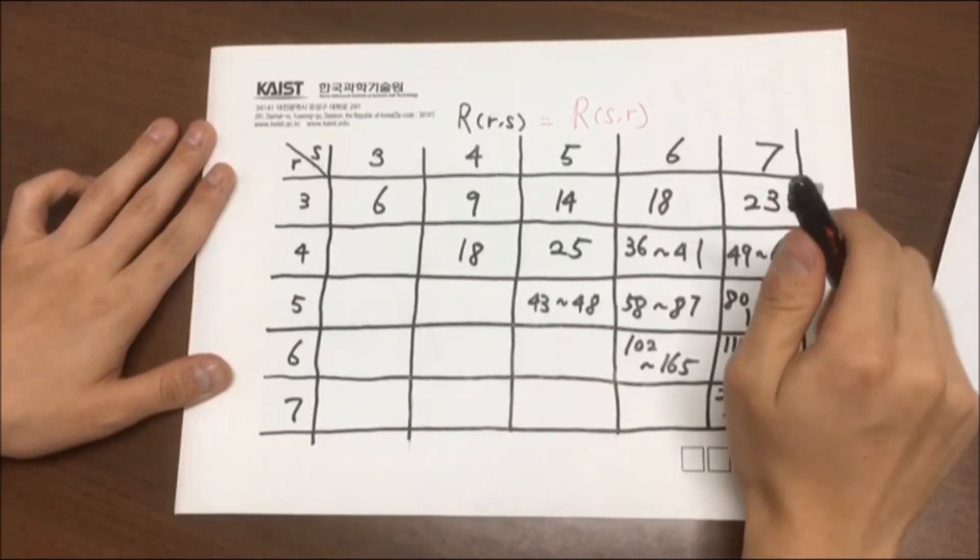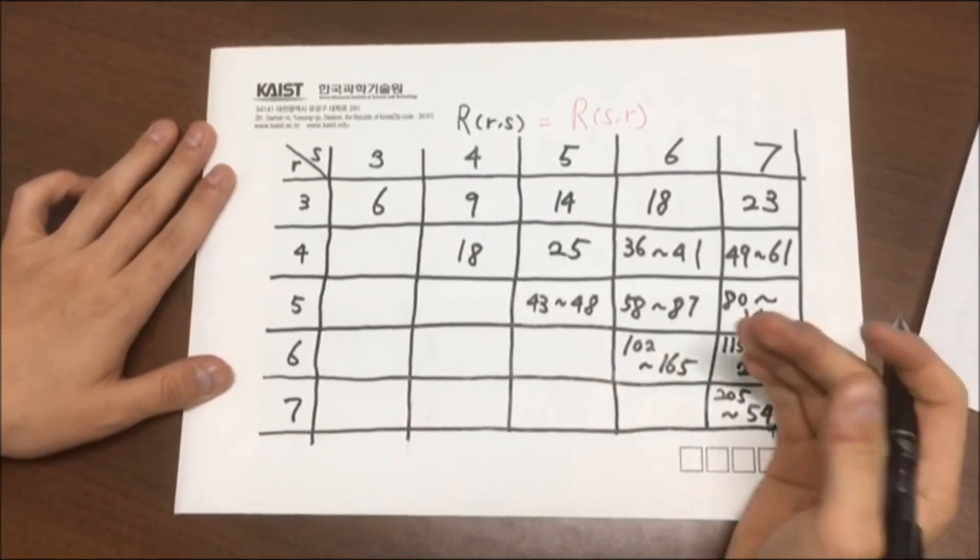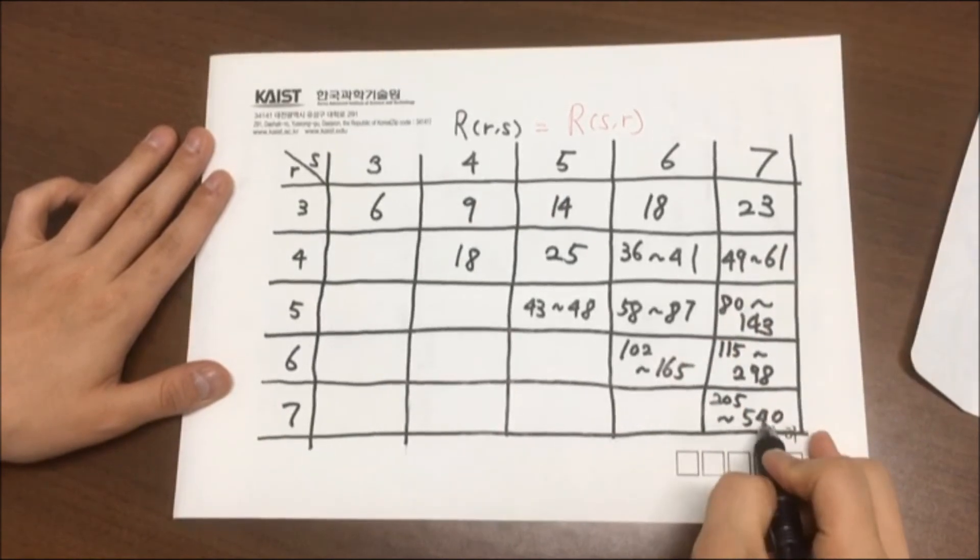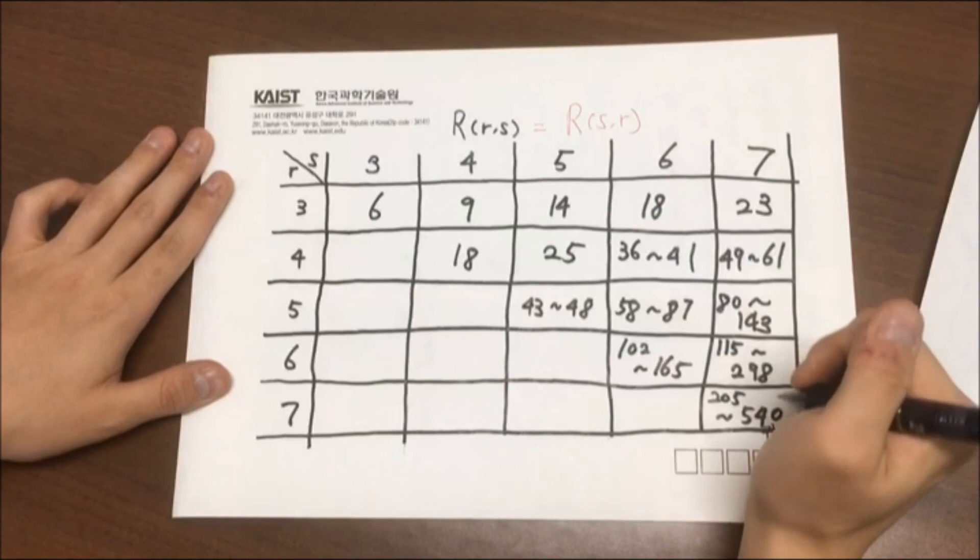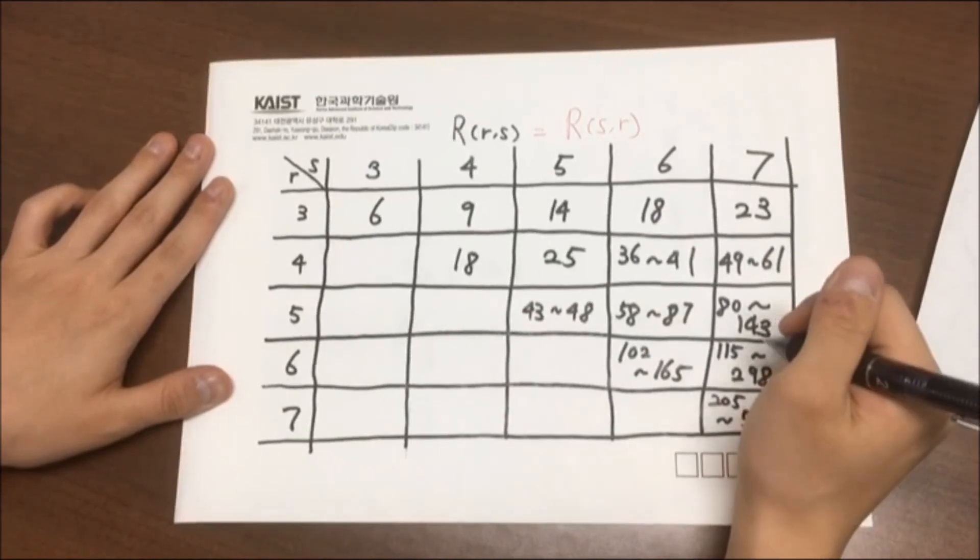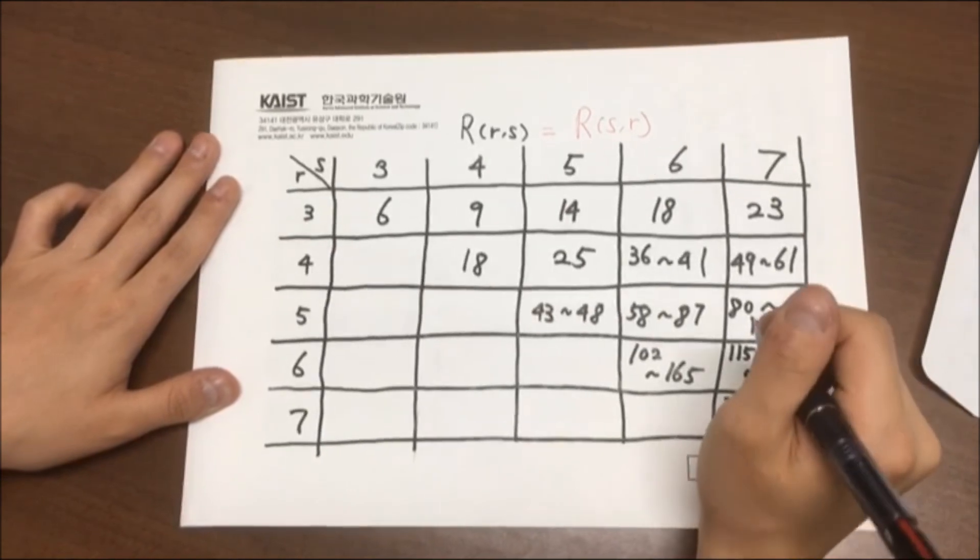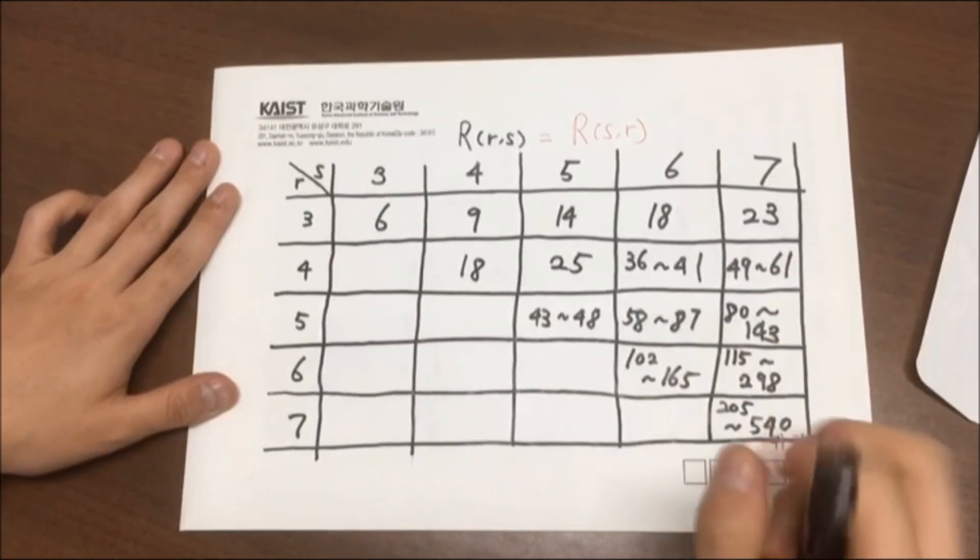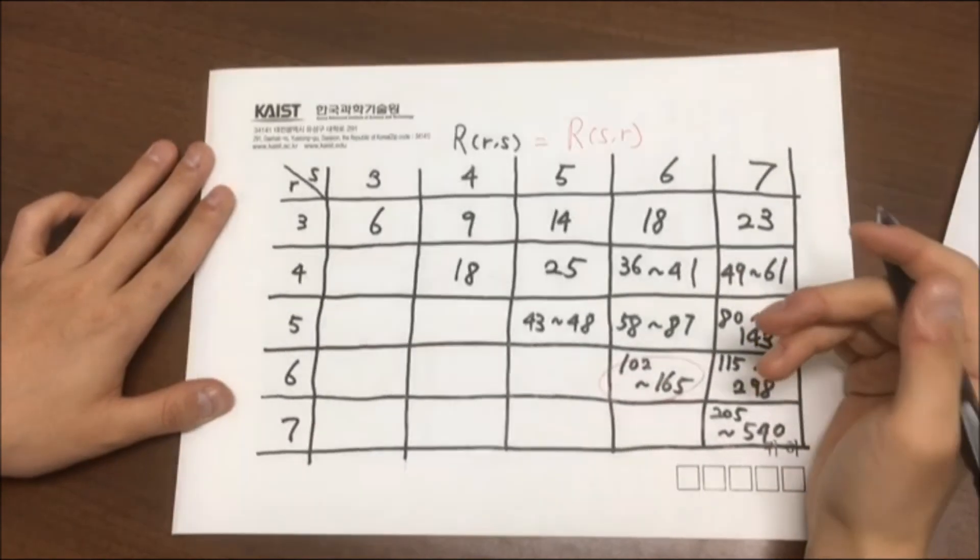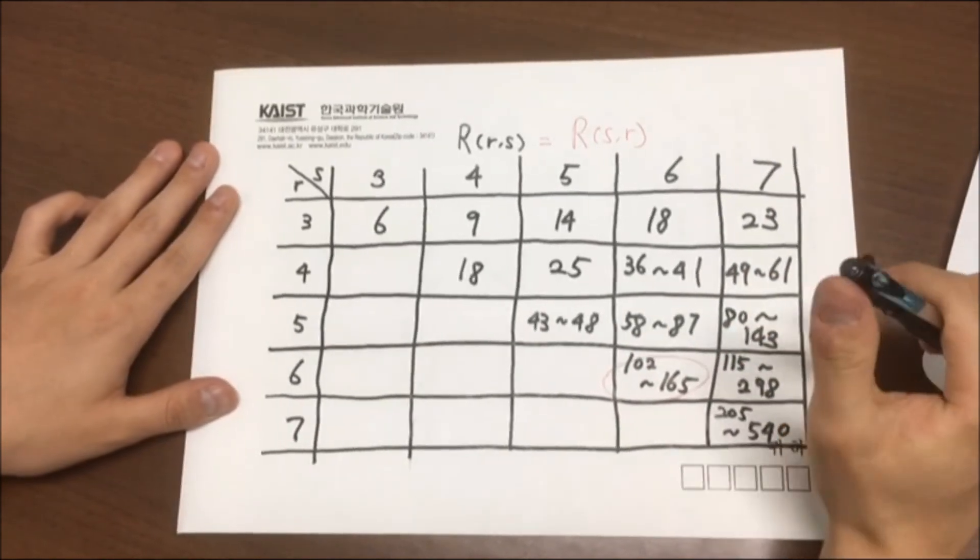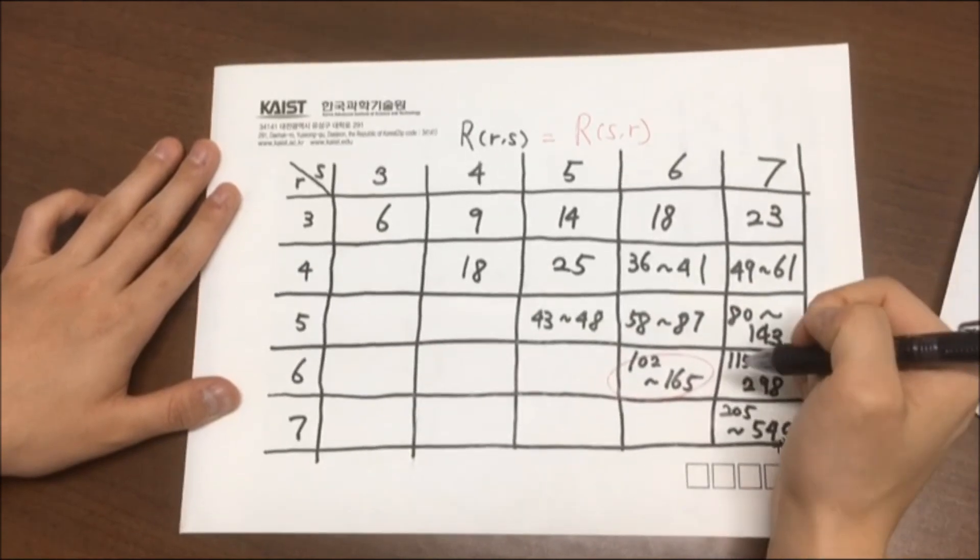And as you can see, as number increases, the range of possible Ramsey's number increases dramatically, as we have to check all the possible combinations of edge colorings. Well, quoting from our professor, if aliens invade earth and demand us to compute R(6,6), which is right here, rather than computing it with all using all our resources, it would be much faster to prepare a war with them.